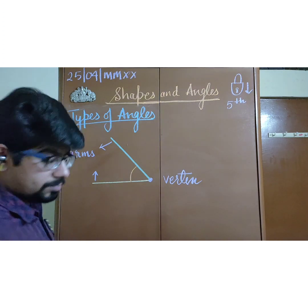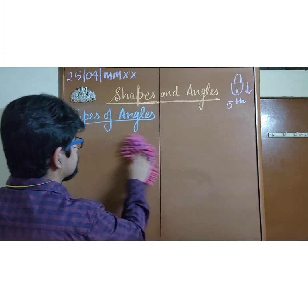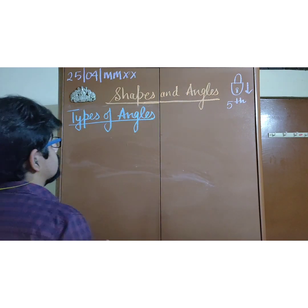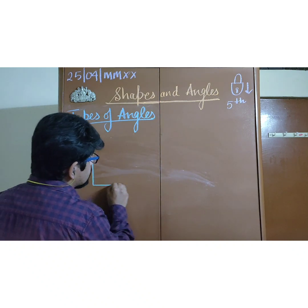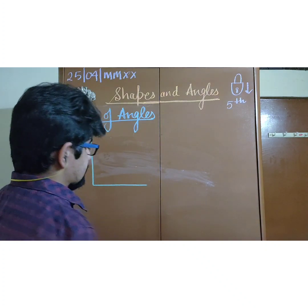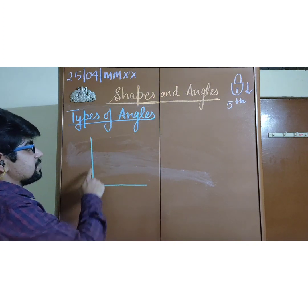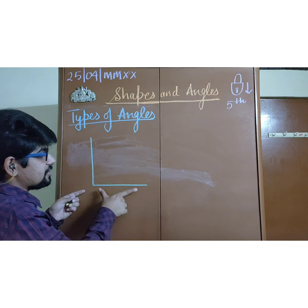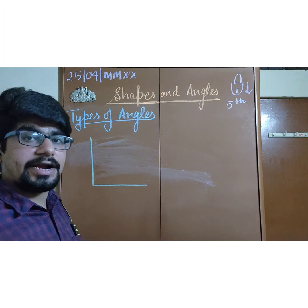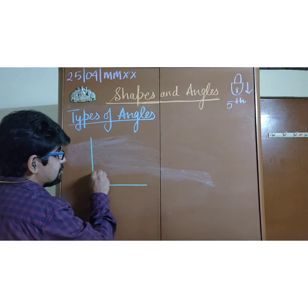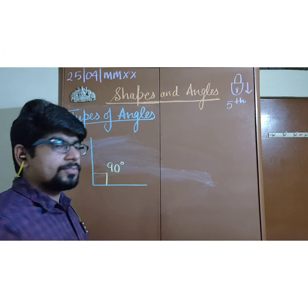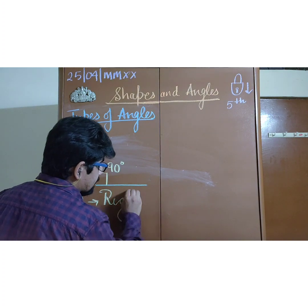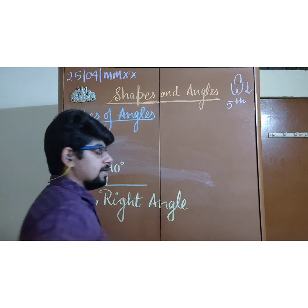Let us move to our main topic. Let us begin with an example. I am taking two arms — this arm and this arm. These two arms are positioned such that one arm is standing straight on the other arm. When you measure this angle using a protractor, you will find its value as 90 degrees. This 90-degree angle is known as a special angle called the right angle.